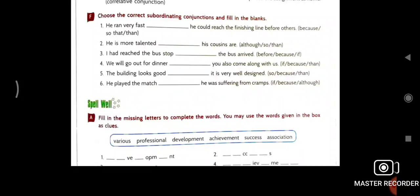Choose the exercise. Choose the correct subordinating conjunctions and fill in the blanks. Already given. Then what is the column? Because, so that, so that, because, so that, or then. Second one, he is more talented if his cousins are, although, so, or then. So read the sentence. Very easy way you can find it out, which one is suitable in the sentence.